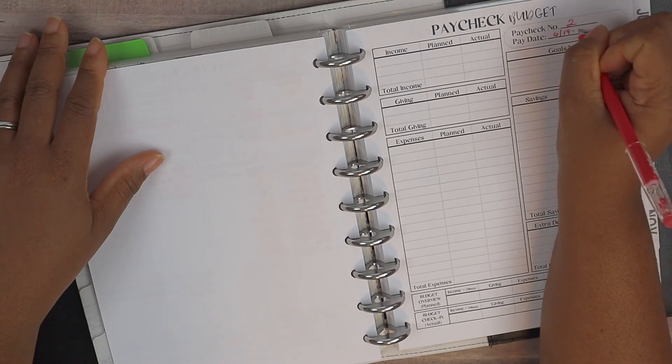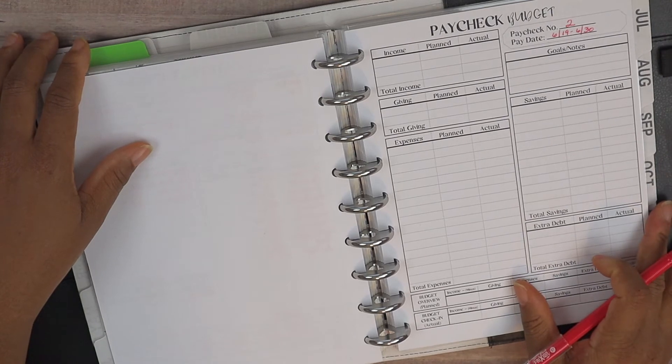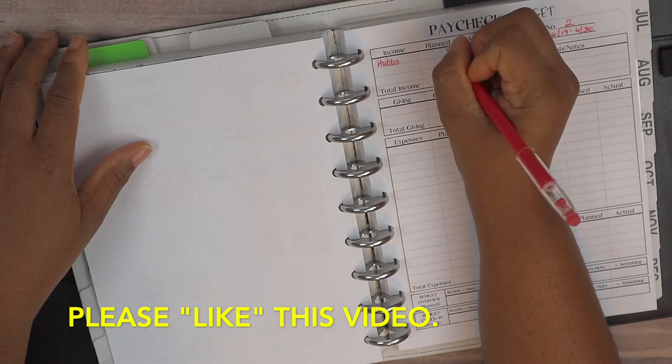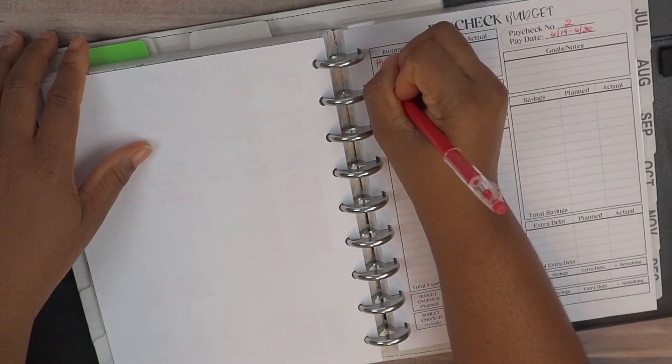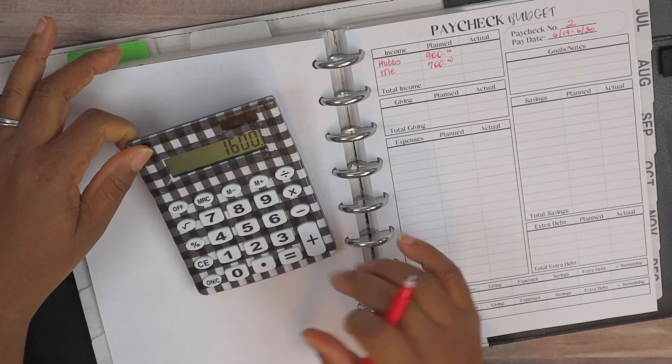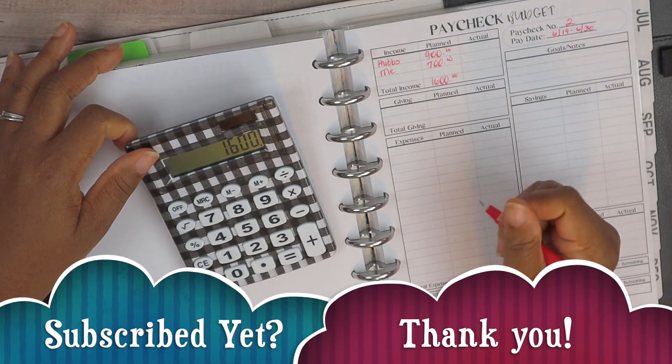Now for hubs income direct deposit into this account, we are planning $900, and then for me we are planning $700. So that is a total of $1600 that we are planning for paycheck number two.